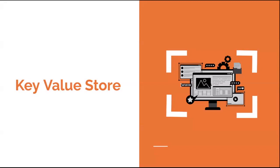In this part we will be talking about key-value stores. A key-value store is a type of database that stores data as a collection of key-value pairs. Each piece of data is associated with a unique key that can be used to retrieve it. This type of database is often used for caching, session management, and other applications that require fast access to small amounts of data. The basic operations are to store a value with a corresponding key and retrieve the value when given the key. The key-value store can be implemented as a hash table, which provides constant time complexity for both storing and retrieving data.